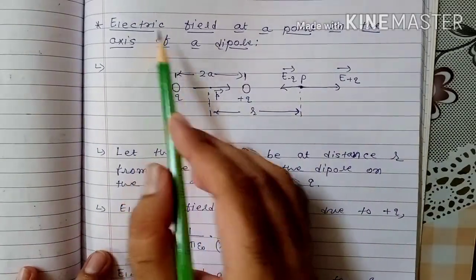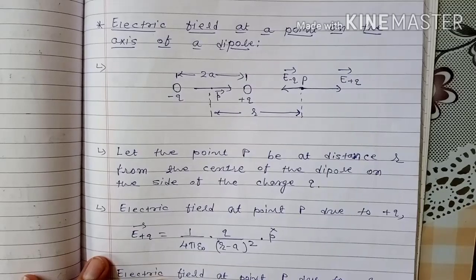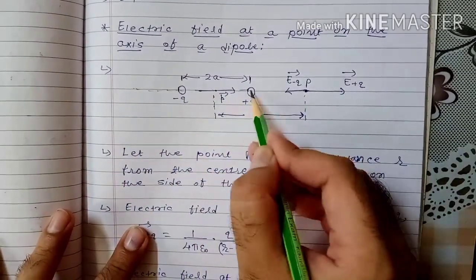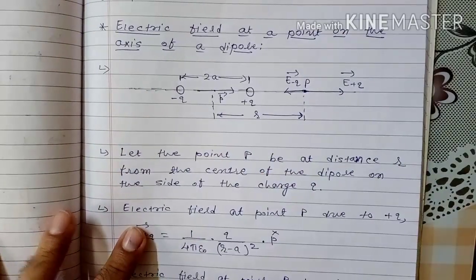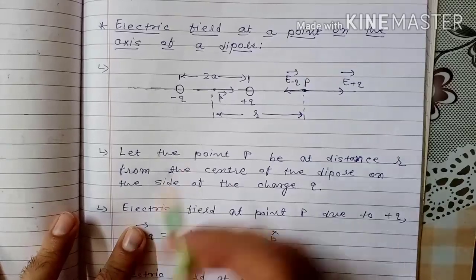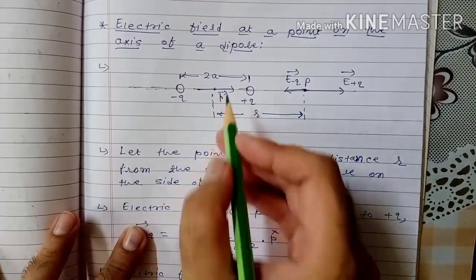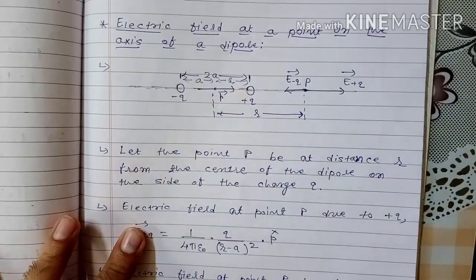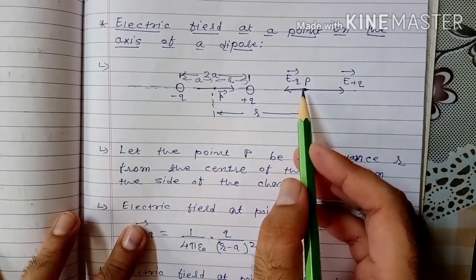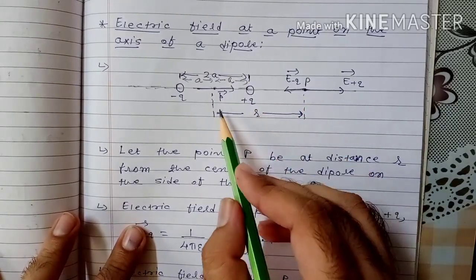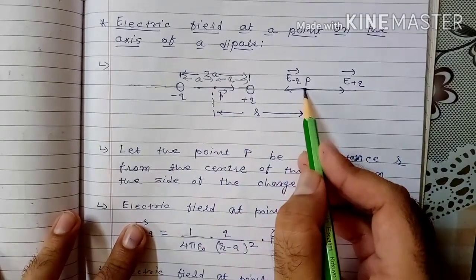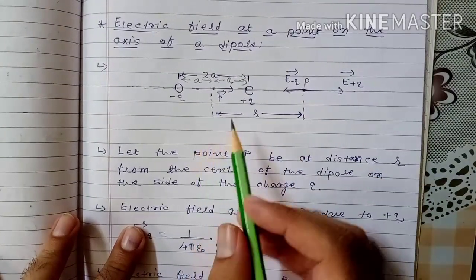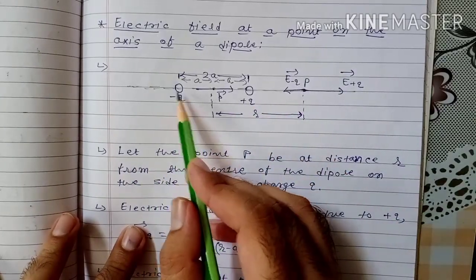An important theory of this chapter: electric field at a point on the axis of a dipole. We draw an axis passing through the dipole. The center of the dipole is at the midpoint; the distance from the center to plus q is a, and to minus q is also a, so total separation is 2a. We consider a point P near to plus q, at a distance r from the center of the dipole. At point P we find the electric field due to the plus q and the minus q point charges.